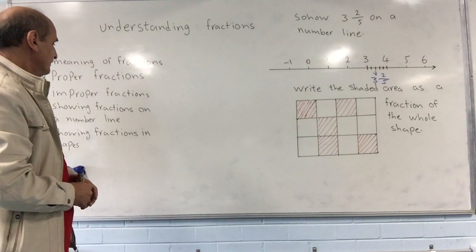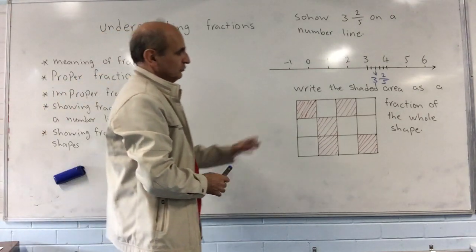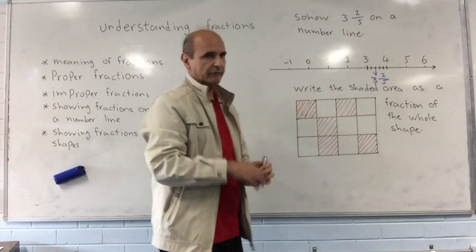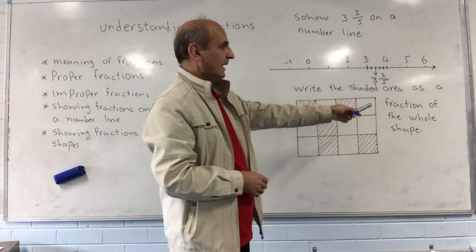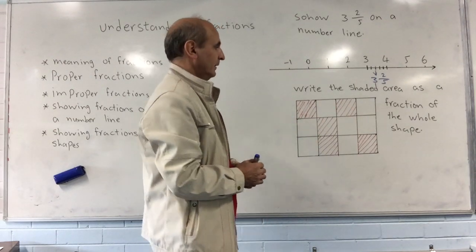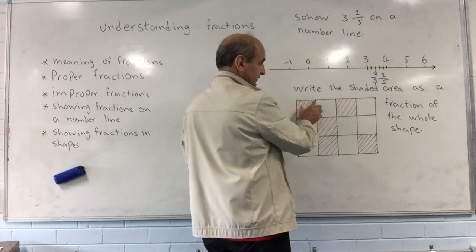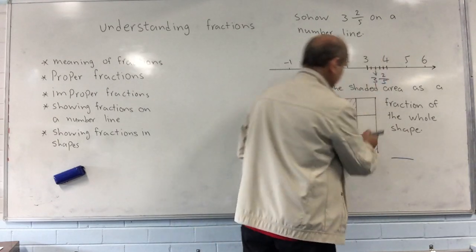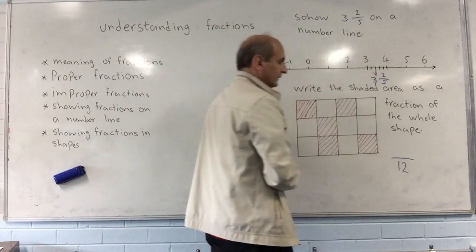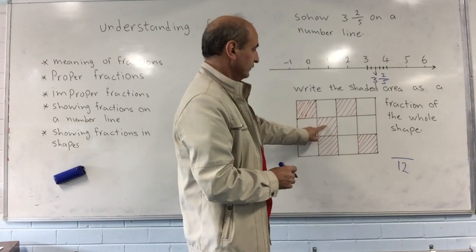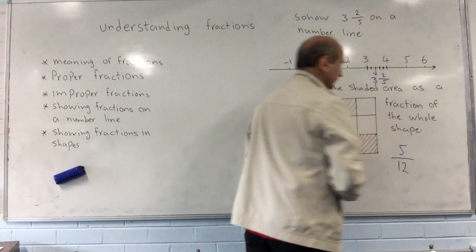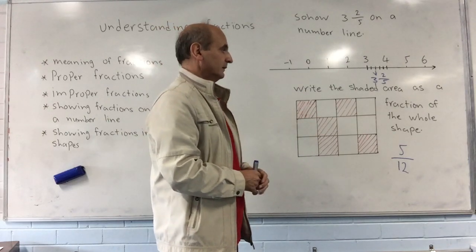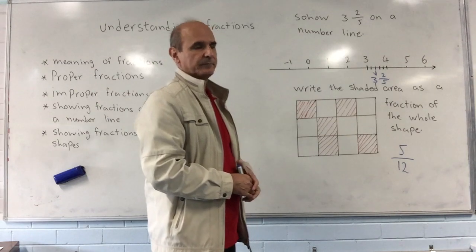For showing fractions in shapes, assume you have this shape as the whole. We want to show the shaded area as a fraction of the whole shape. The whole shape has twelve small parts, so twelve goes into the denominator. Five of those parts are shaded, so five goes into the numerator. Therefore, five-twelfths is the fraction of this shape that has been shaded. Thank you for your attention.